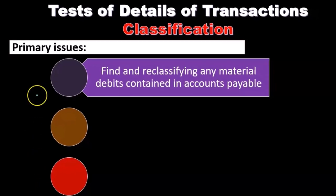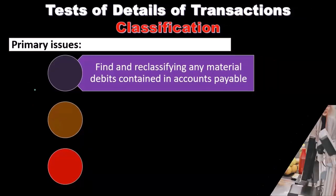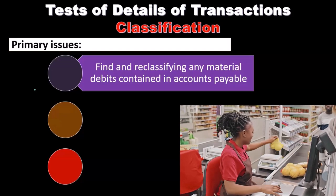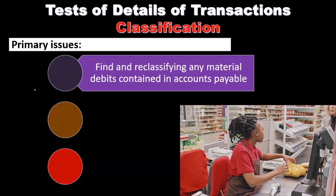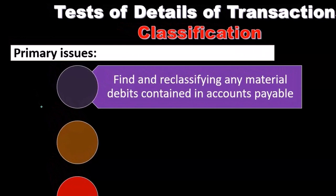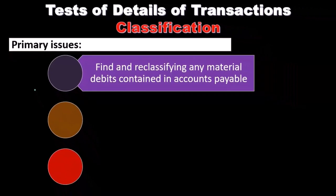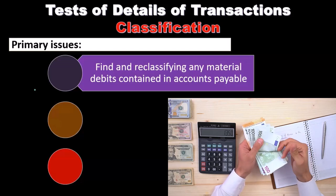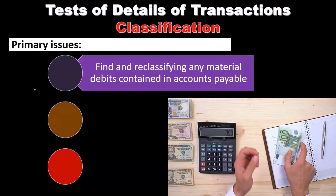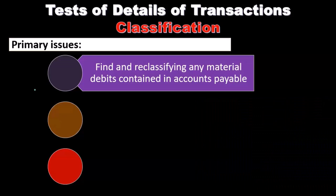A debit balance in accounts payable could occur if, for example, a down payment is made on a purchase before the goods are received. Some systems record this as a negative payable to make it easier to track what is owed by vendor, rather than setting up a separate asset for the advance payment. Once the goods are received, the negative liability matches up with the invoice, making the vendor reconciliation process easier.